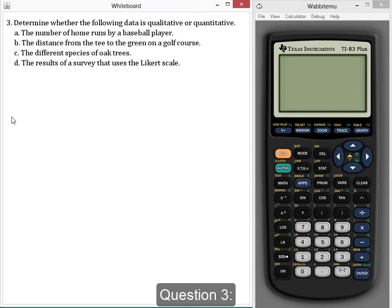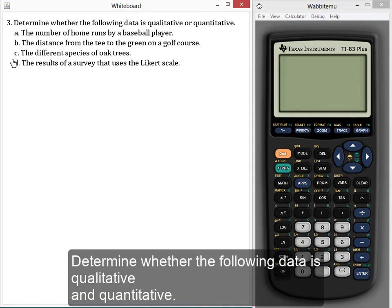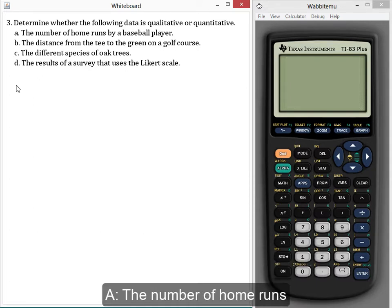Number three. Determine whether the following data is qualitative or quantitative. A. The number of home runs by a baseball player.